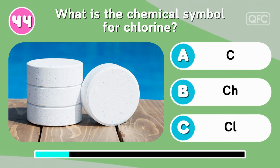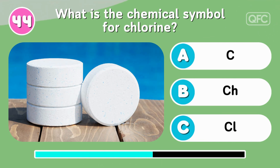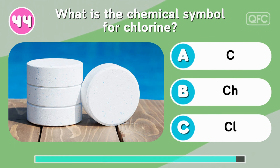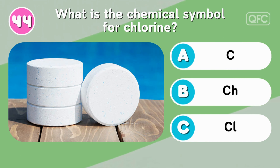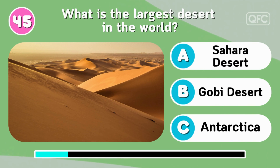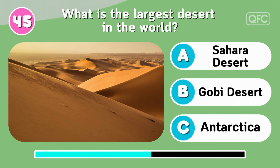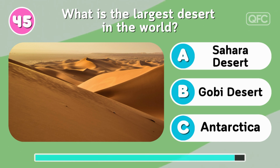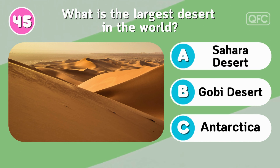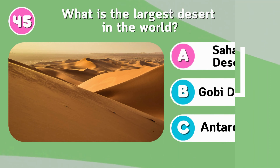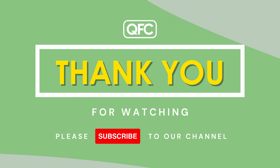What is the chemical symbol for chlorine? CL. What is the largest desert in the world? Sahara Desert.